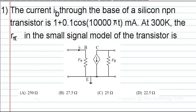The current IB through the base of a silicon NPN transistor is 1 + 0.1cos(10000πT) mA. At 300 Kelvin, the rπ in the small signal model of the transistor is: